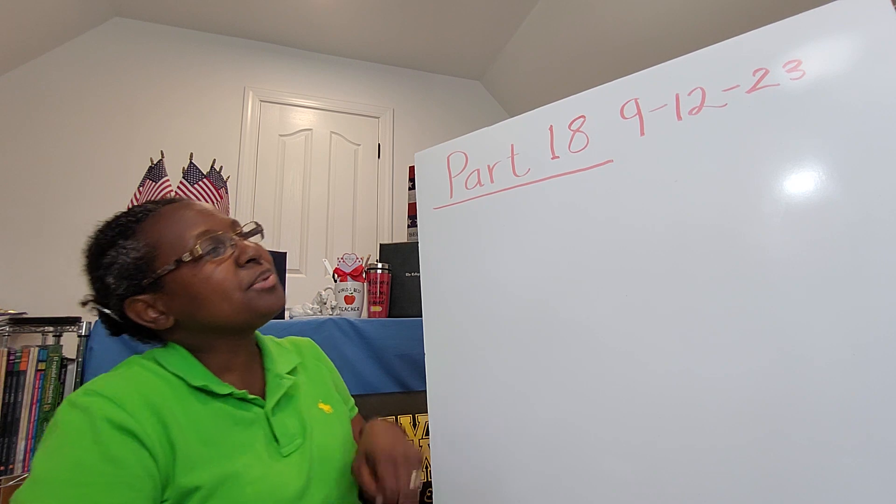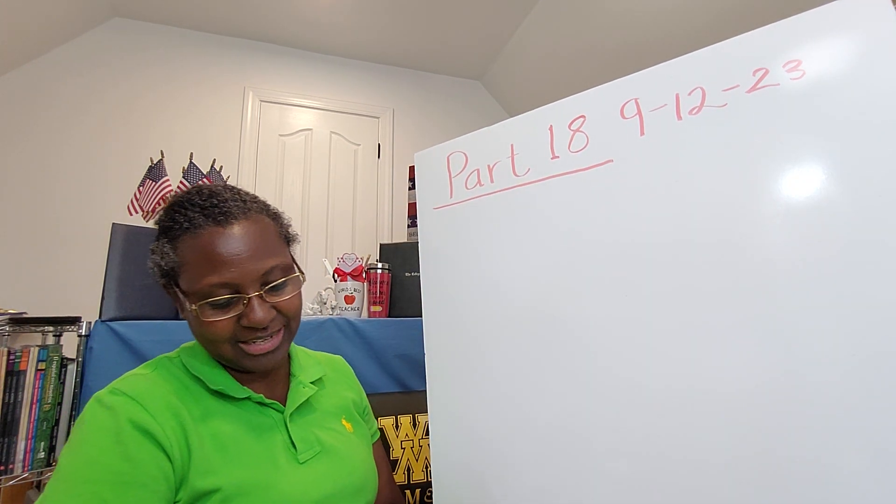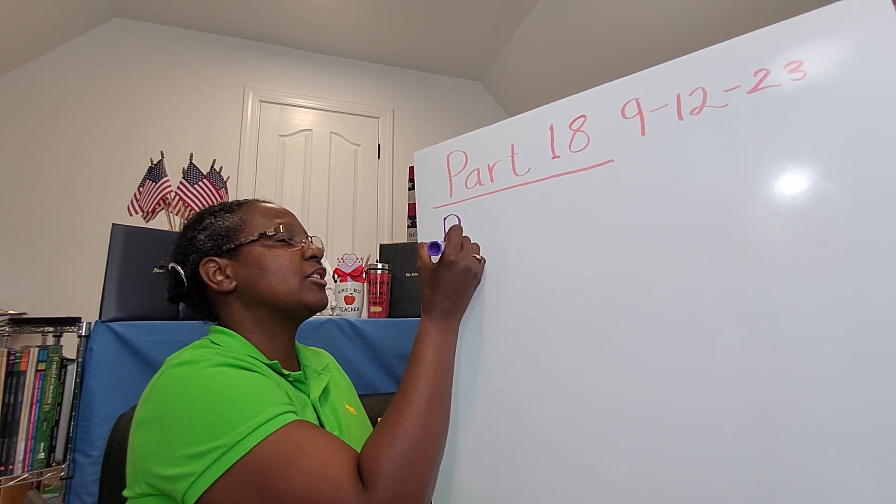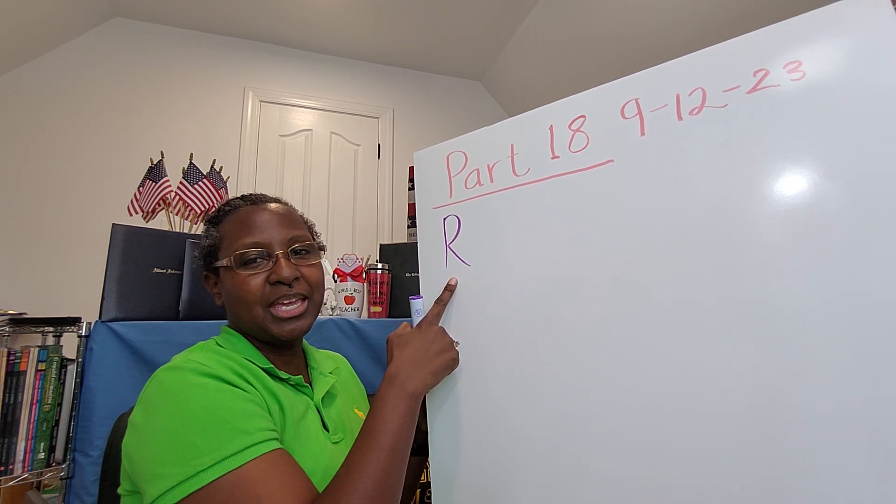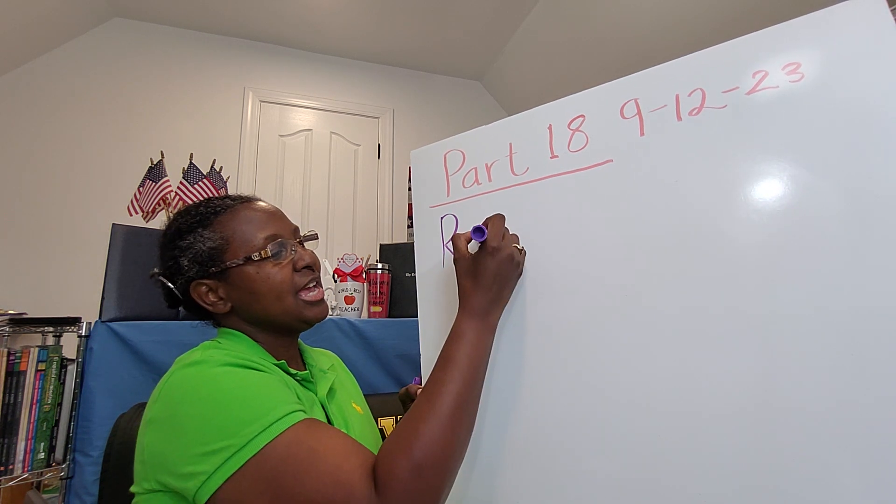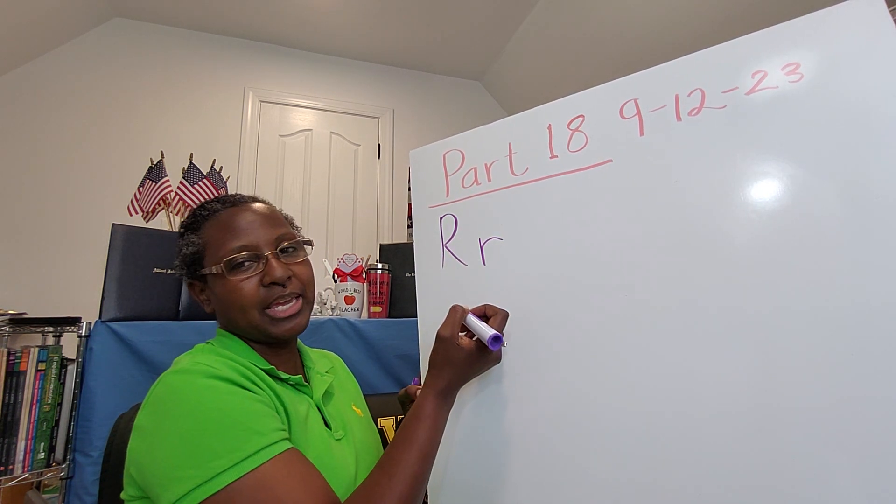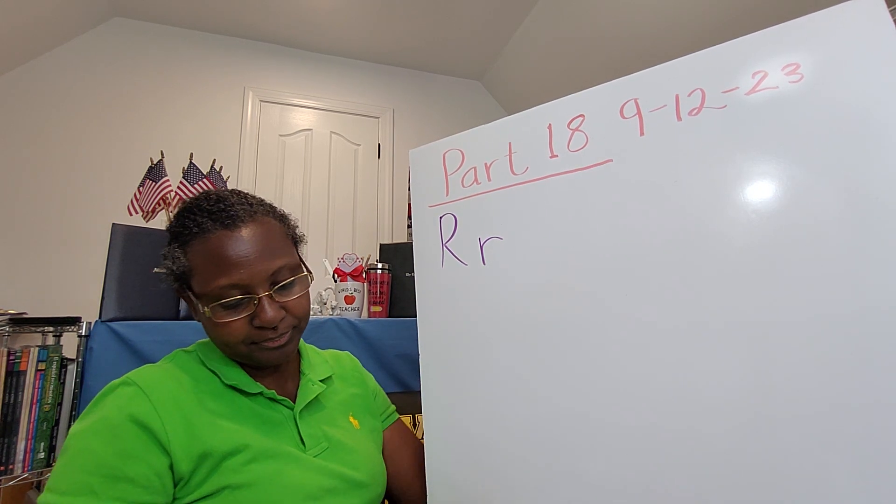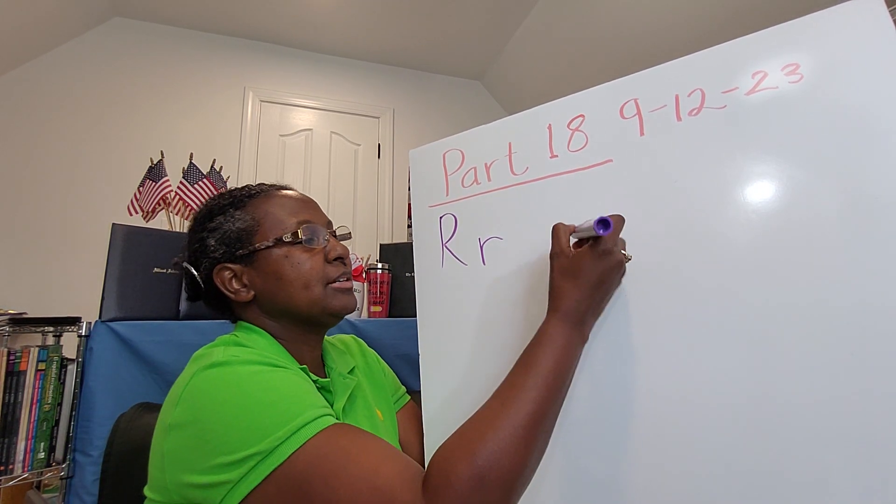We're on part 18 of 30 and letter 18. The 18th letter of the alphabet is the letter R. There's our big uppercase capital R and our little lowercase R.